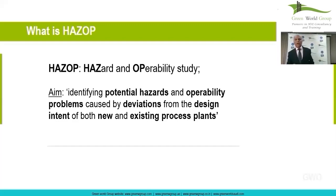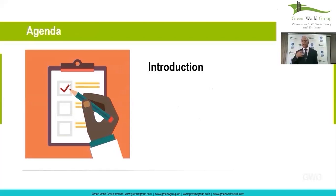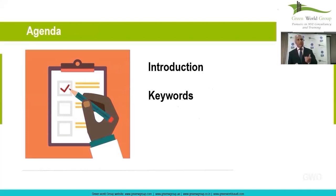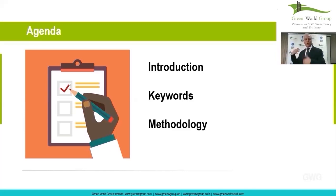And that's the objective of HAZOP. Broadly, you can cover HAZOP in three areas: one is introduction — what is HAZOP, the definition, processes; then we use keywords, which we'll talk about today; and then a general methodology, right from identification, preparation, conducting the HAZOP, coming up with recommendations, writing a report, and who should write it. Everything is part of the methodology.